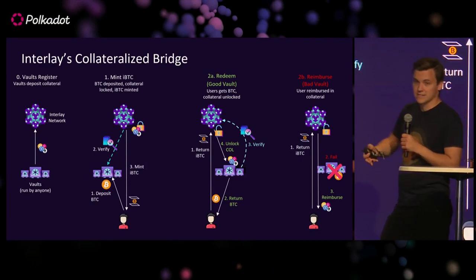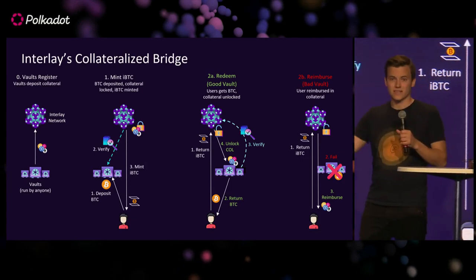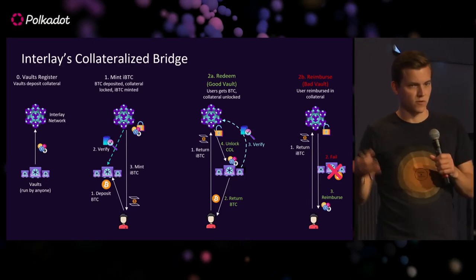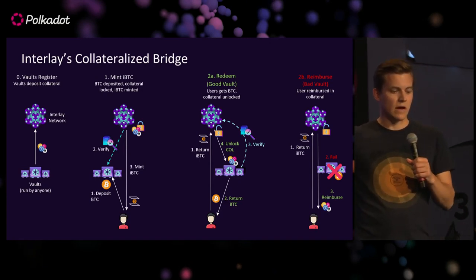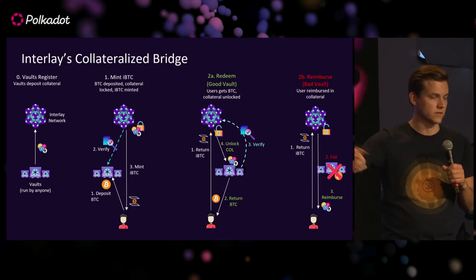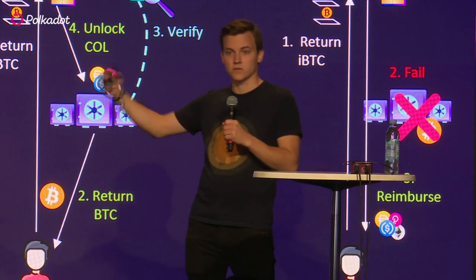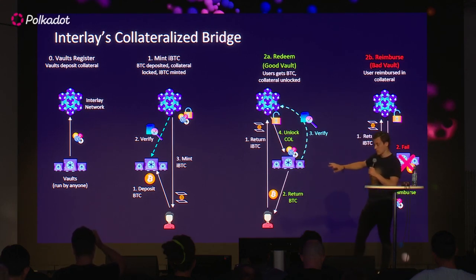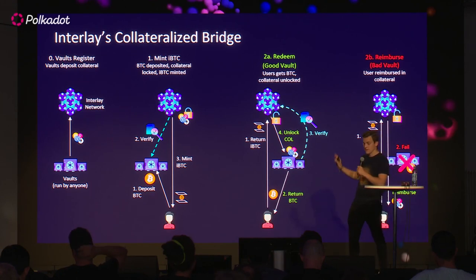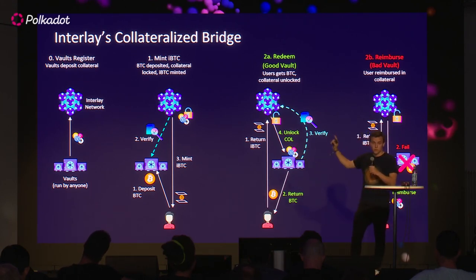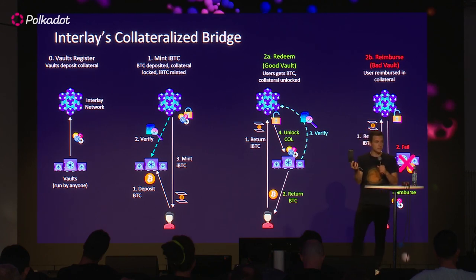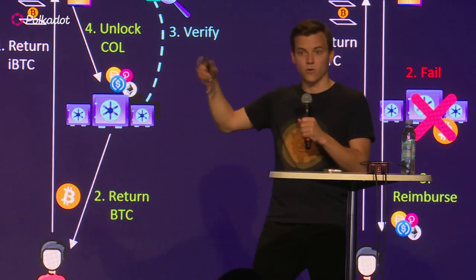The challenge is you don't want to trust anyone in particular with your Bitcoin. The system solves this by requiring vaults to over-collateralize — you lock collateral in different assets, which serves as an incentive not to steal Bitcoin, because if you misbehave you will lose that collateral. The system cryptographically verifies that your Bitcoin has been locked using a cross-chain light client. Our network syncs Bitcoin block headers and can verify transactions, so it always knows what's going on on Bitcoin.